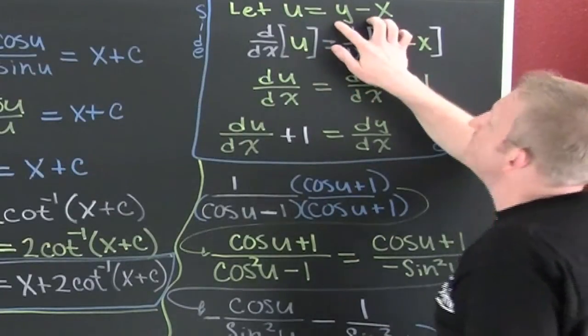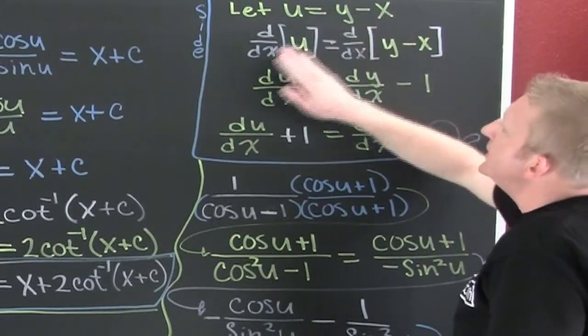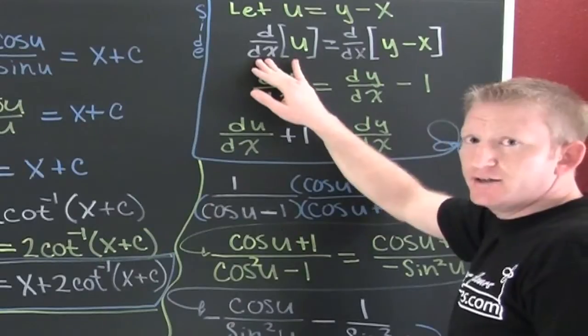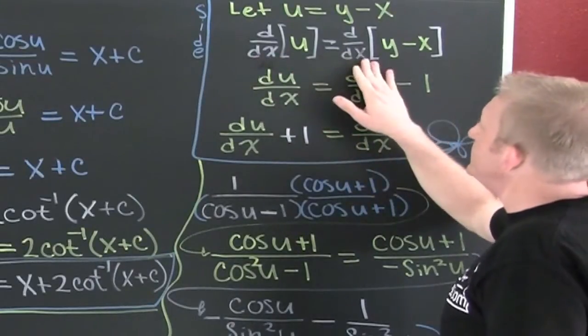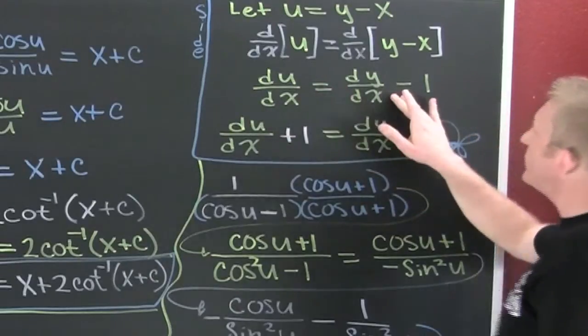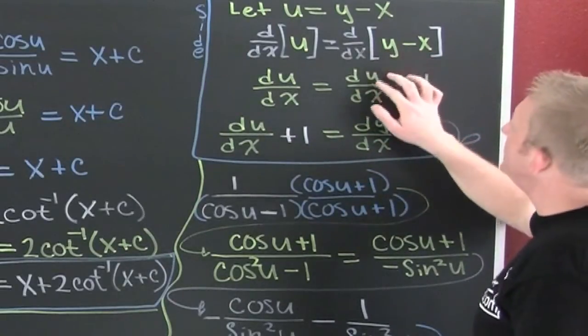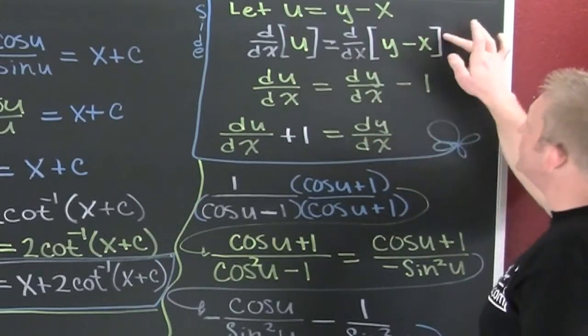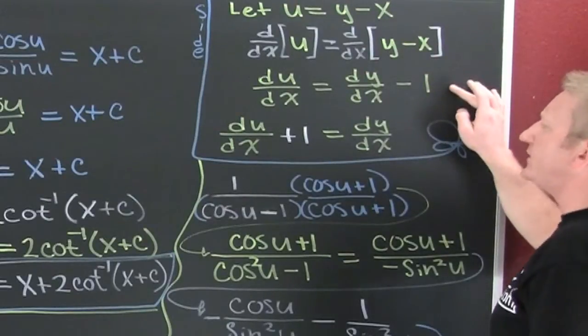I'm going to let u equal the stuff in that argument. Then I want to differentiate each side with respect to x. When I do that on the left side I get du/dx and on the right I'm going to have dy/dx minus one.